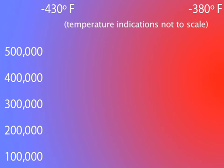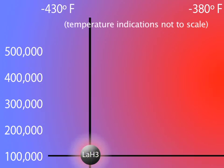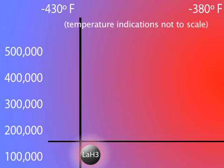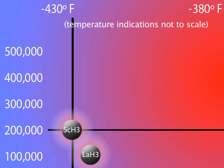Lanthanum trihydride stabilized at about 100,000 atmospheres and a transition temperature of minus 423 degrees Fahrenheit or 20 degrees Kelvin. Scandium trihydride stabilized at about 200,000 atmospheres and minus 427 degrees Fahrenheit or 18 degrees Kelvin.